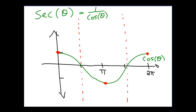Going from x equals 0 heading towards π/2, notice that our cosine graph gets smaller and smaller until it reaches 0. If the cosine in our expression gets smaller and smaller, that actually means that secant will be increasing — getting larger and larger. So we can see that this function will go off and head towards the asymptote in that way.